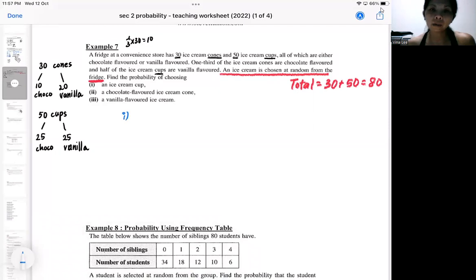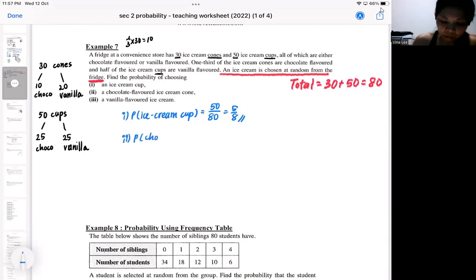So out of the 80 ice cream, what is the chance that you will get an ice cream cup? So out of the 80, we got 50 cups. So that's the interpretation. So then out of the 80, what's the chance that I will get a chocolate cone? Read carefully. Chocolate cone. So there's only 10 chocolate cones. So it's 10 out of 80. So be careful.